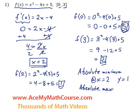Absolute max at x equals 0 when y is 5, of course. And that's the absolute maximum right here. That is the absolute minimum. And that's it.